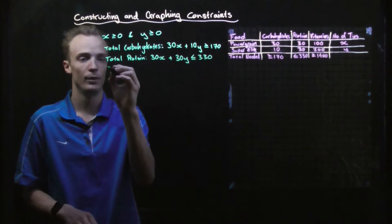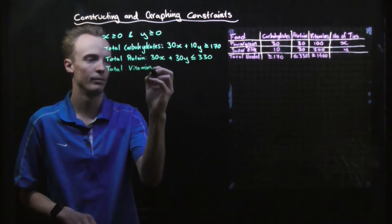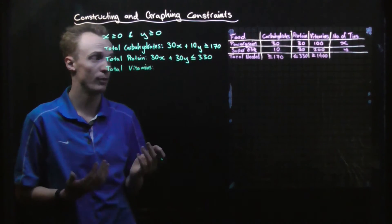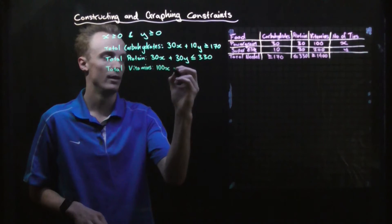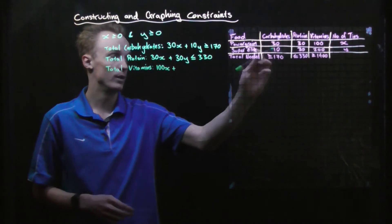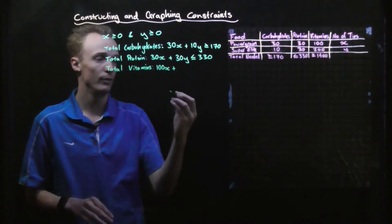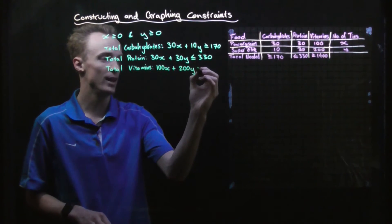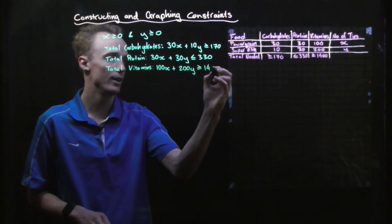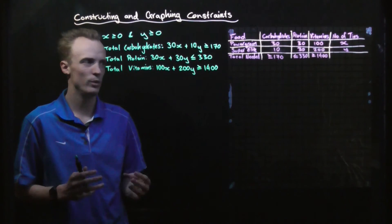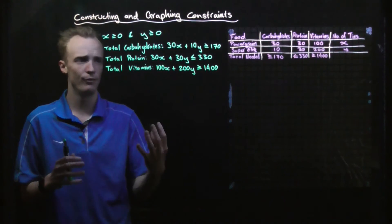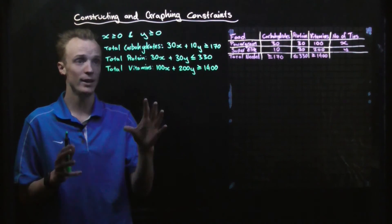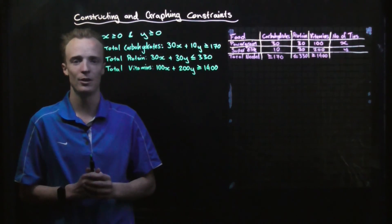Then for vitamins, we do the same. It's going to be 100 units of vitamins multiplied by the number of tins for Power Grain — so 100X — plus 200 units of vitamins for Super Elite multiplied by the number of tins — so 200Y. We need at least 1,400, so it's 100X + 200Y ≥ 1,400. What we've now done is used this table to help us define where the feasible region or feasible solutions exist within our problem. We can now go ahead and graph this, which is what we're going to do in our next video.